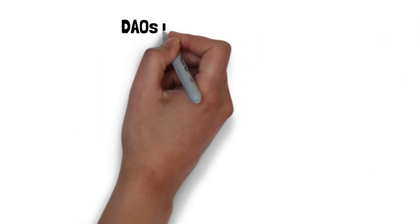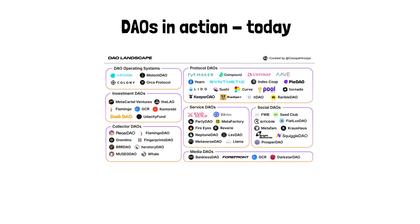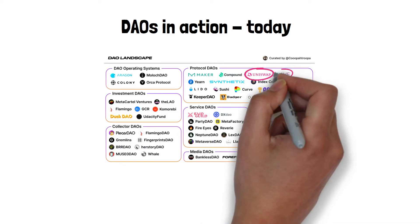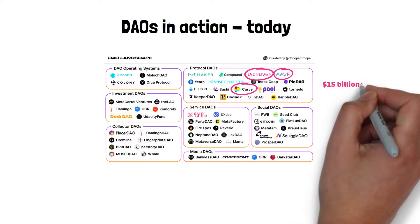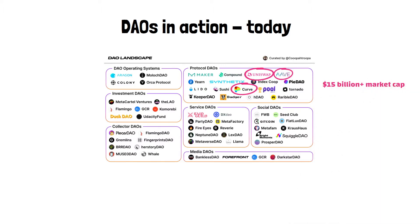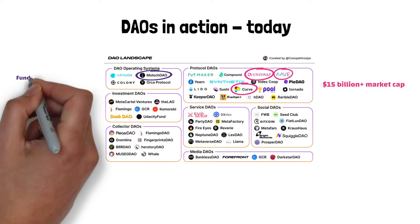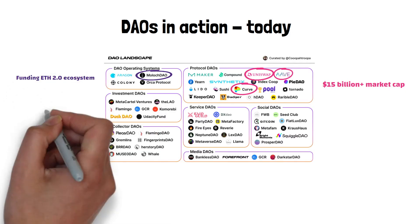How are DAOs being used today? Here is an overview of the DAO landscape. Pretty much every reputable DApp or protocol uses a DAO structure. Uniswap, Aave, Curve — all popular protocols with billions of dollars at stake are controlled by DAOs. Moloch DAO is funding the development of public infrastructure related to ETH 2.0.